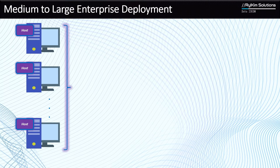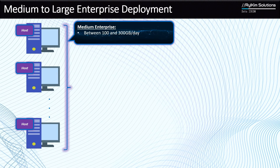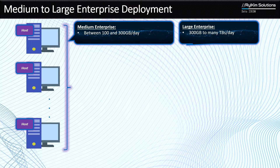Now let's look at the largest ones — the medium to large enterprise deployment. For medium enterprise, the ingest volume is between 100 and 300 gigabytes per day. So you've moved from 20 gigs, then small enterprise from 20 to 100, and now medium enterprise is between 100 and 300 gigs per day. Large enterprise will be for organizations ingesting between 300 gigabytes to several terabytes of data per day.